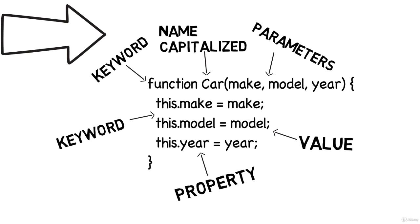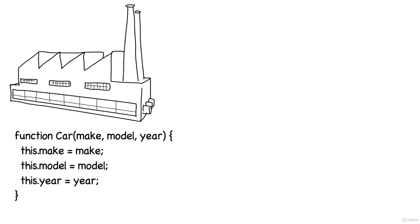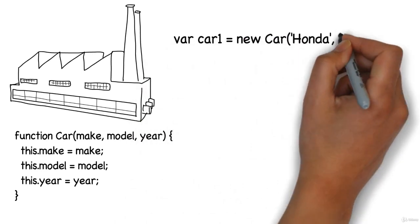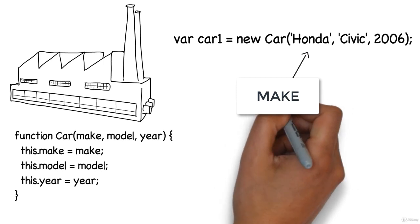Let's produce a mass amount of cars. The function car is an object constructor. Once you have an object constructor, you can create new objects or instances of the same type. We can do that by setting a new variable of car1 and assign it a value of new car. And remember, car doesn't have to be capitalized, but it is the convention and best practice in this case.